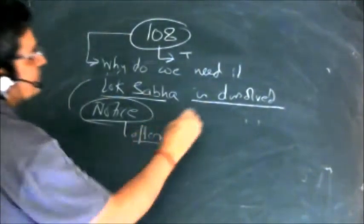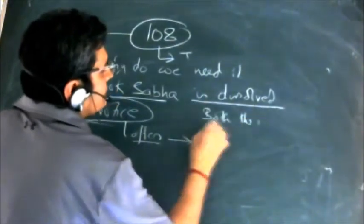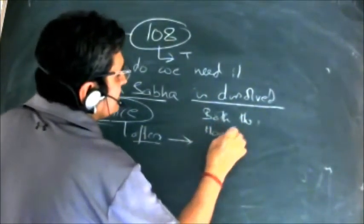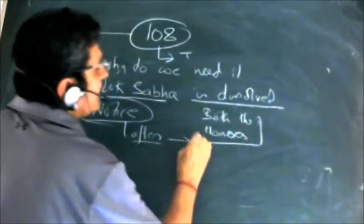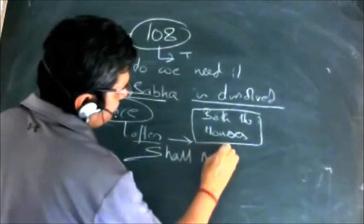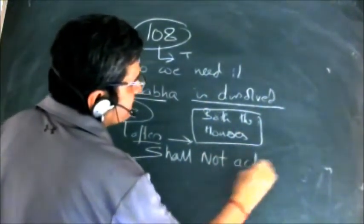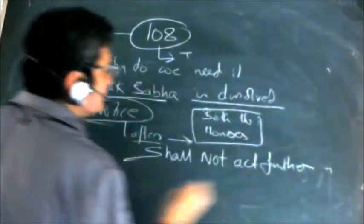After this, both the houses, either of the houses in fact, shall not act on the bill, shall not act further, because that would be a futile exercise.